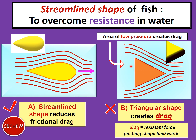When moving the triangular object forward, water flows around it but is unable to fill up the space at the back because it is blocked by the rear part of the object. This creates an area of low water pressure behind the object compared to the higher water pressure in front. Because of this pressure difference, a resultant force called drag pushes the block of wood backwards.